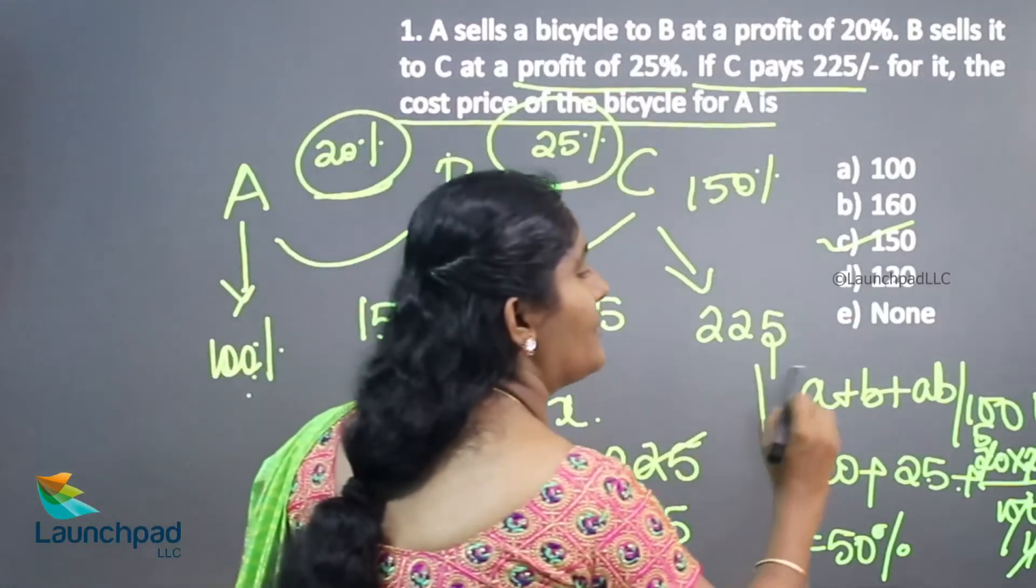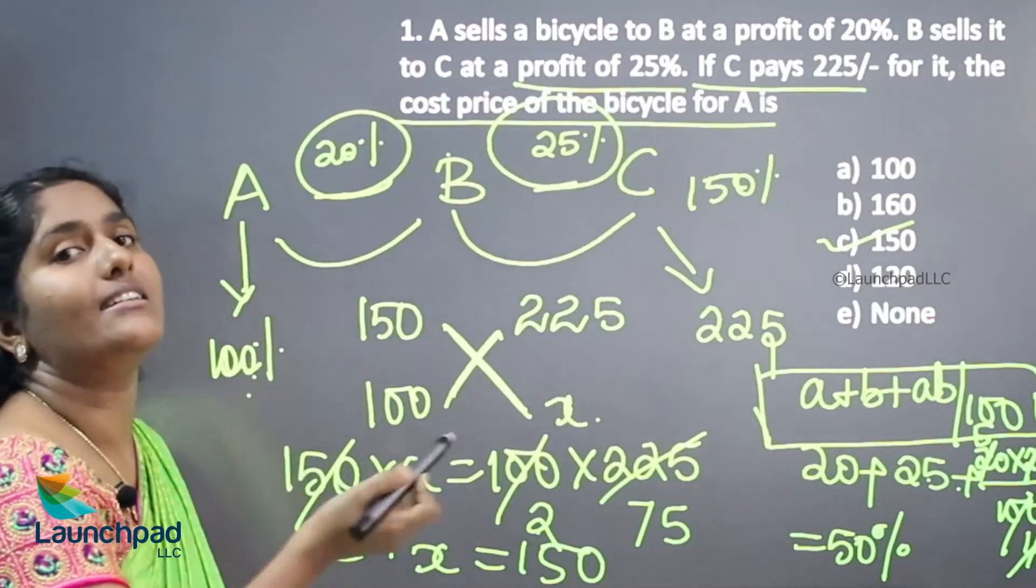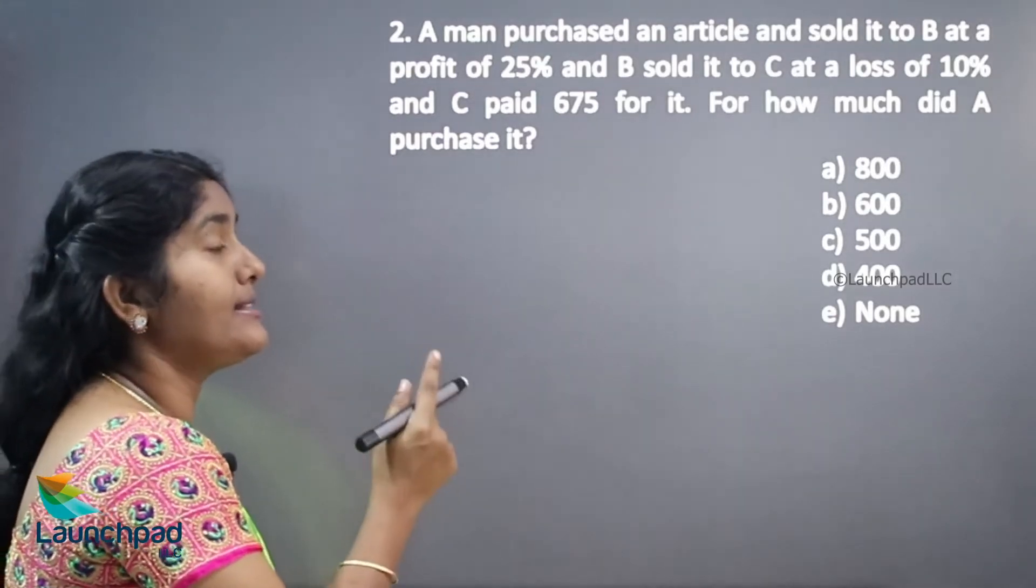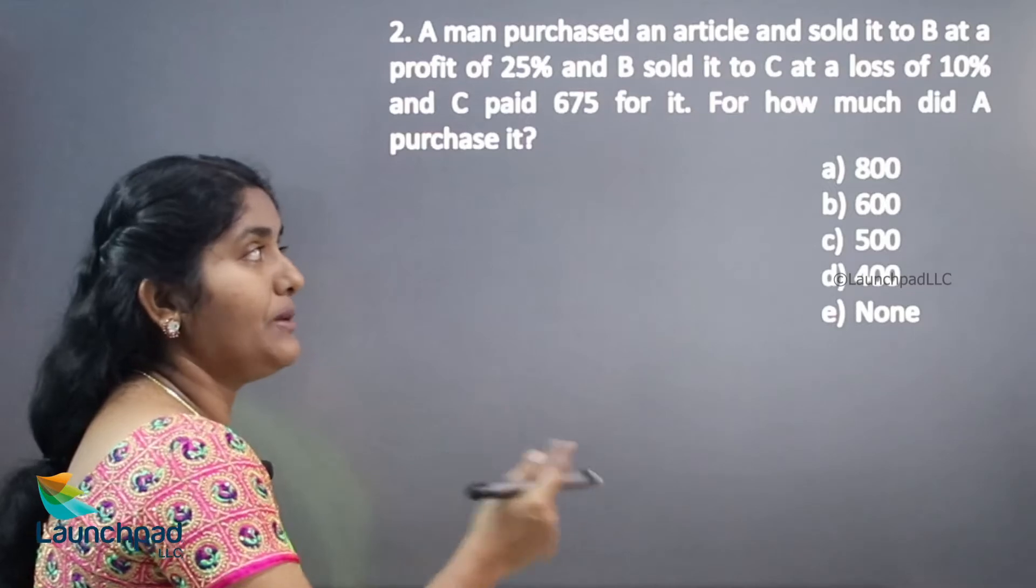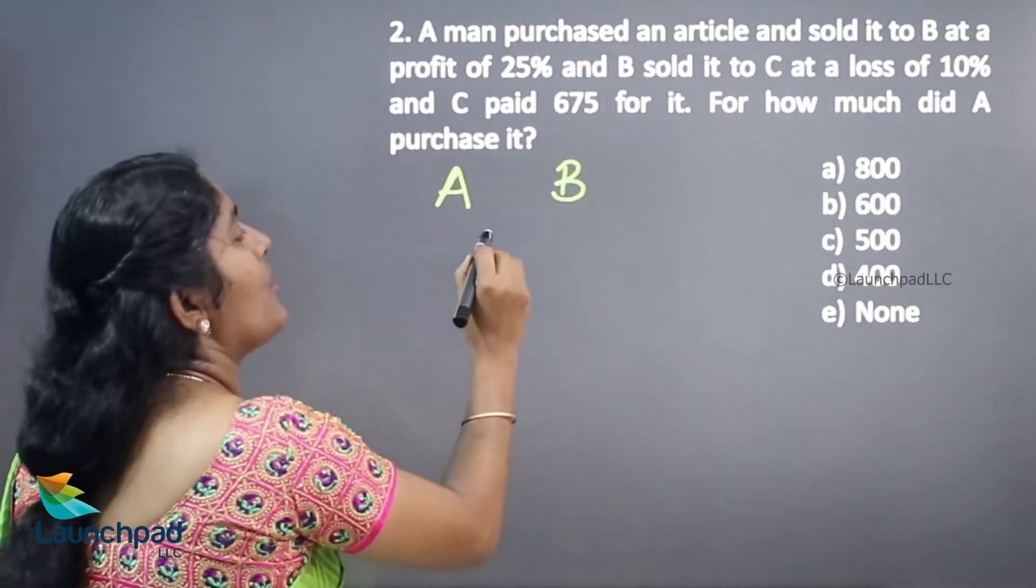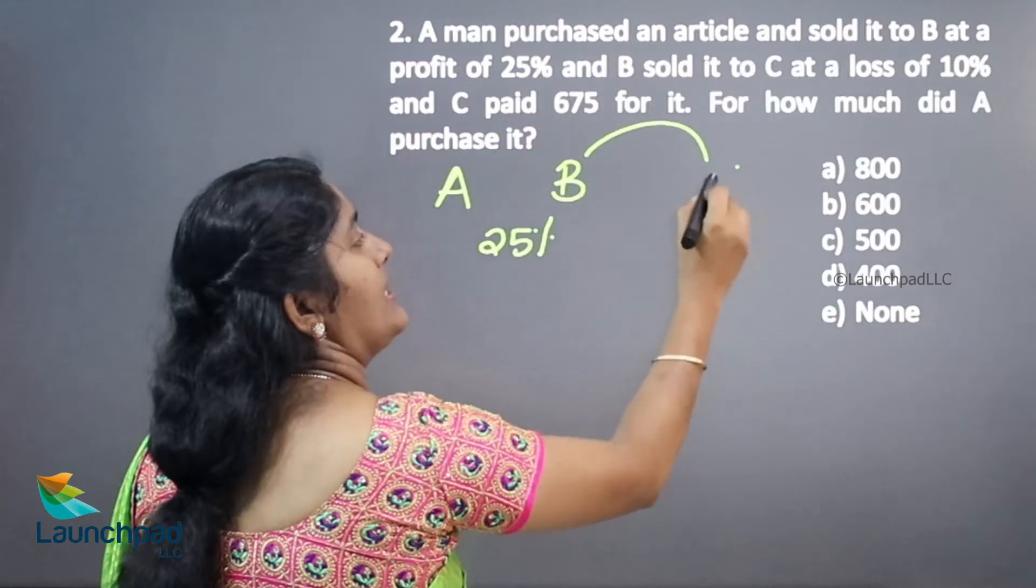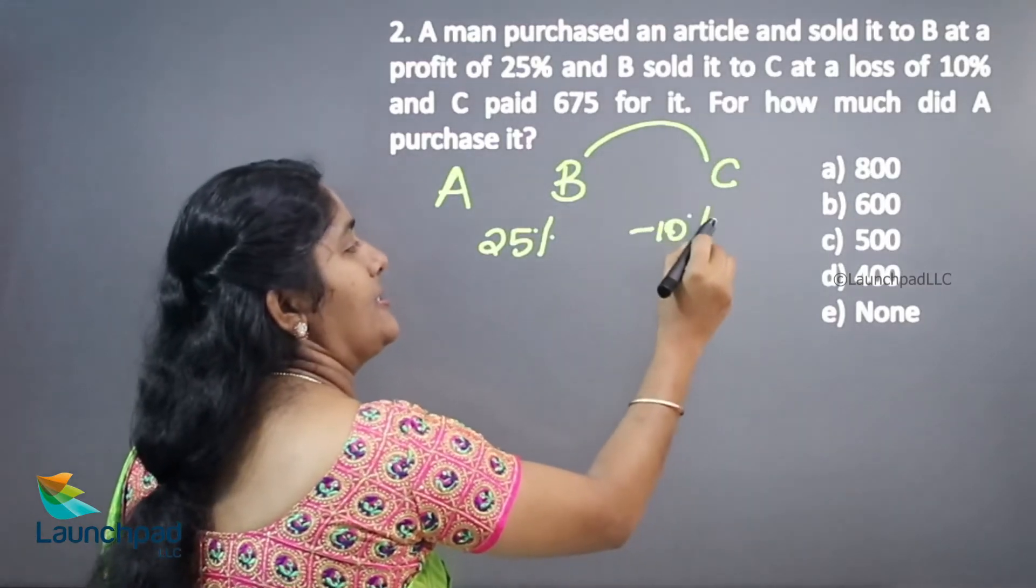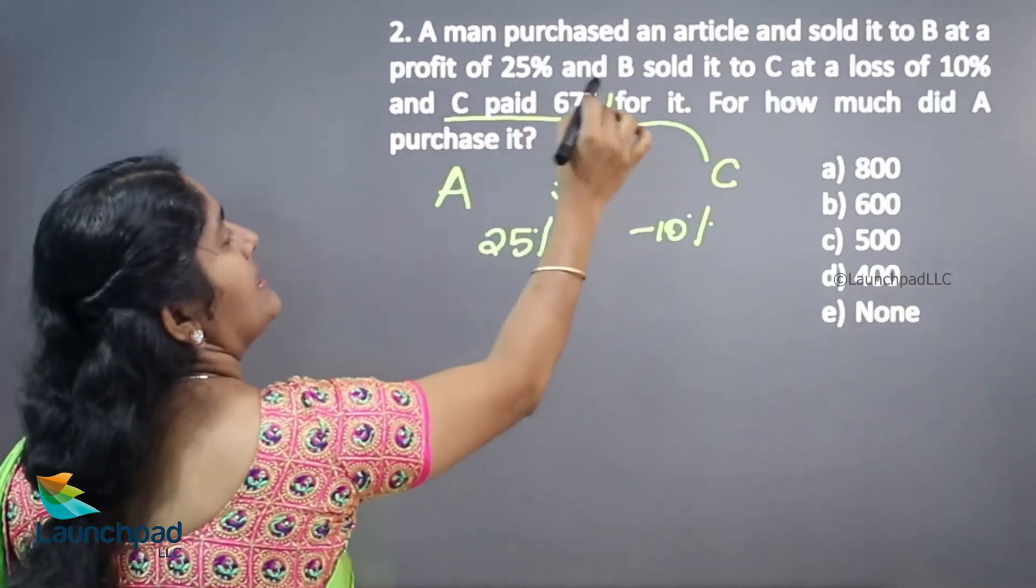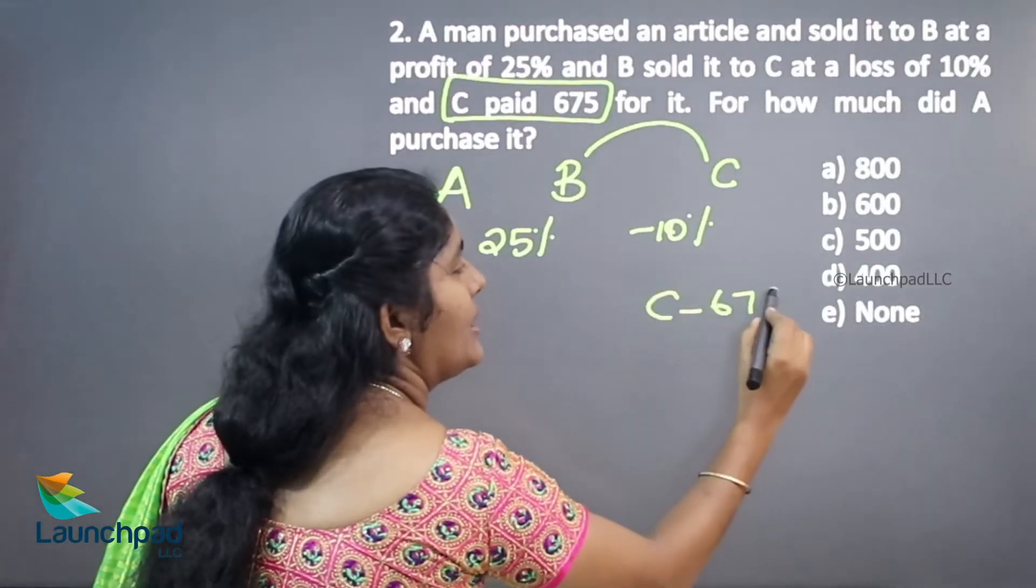By using the shortcut of effective change, we can be able to calculate how much percentage was increased. And your next question is: a man purchased an article and sold it to B at a profit of 25%. Now this B is sent to C at a loss of 10%. C paid rupees 675.